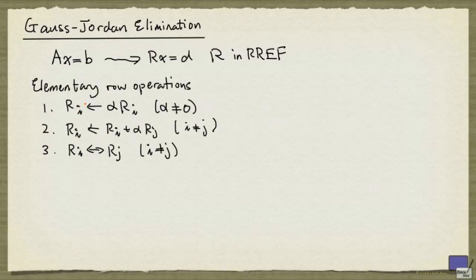Let's first recall the three elementary row operations. The first type of operation is multiplying a row by a non-zero constant. The second type of operation is adding a constant multiple of a row to another row. And the third type of operation is exchanging two rows.